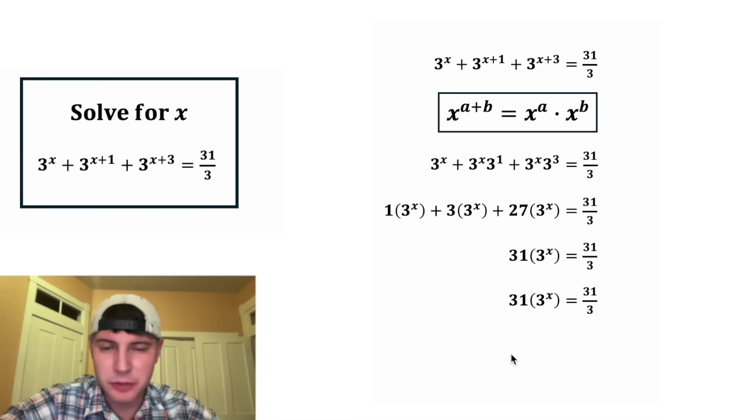And then next we can multiply both sides by one over 31. On the left hand side, this one over 31 and the 31 are going to cancel each other out. So we're left with three to the power of x. And on the right hand side, this 31 and this 31 will cancel each other out, and we'll be left with one third.